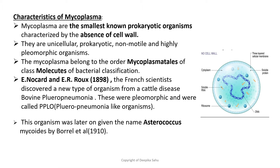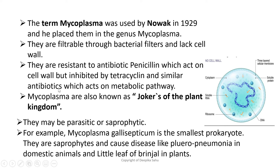You might wonder why it is called 'bovine.' Bovine comes from the Latin word for cow. The biological family Bovidae includes not only cows and oxen, but also goats, sheep, bison, and buffalo. So 'bovine' is used technically when discussing diseases of animals in the family Bovidae.